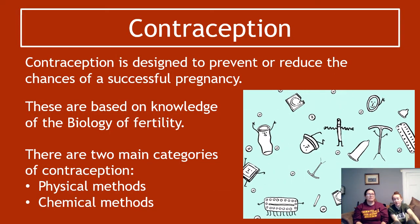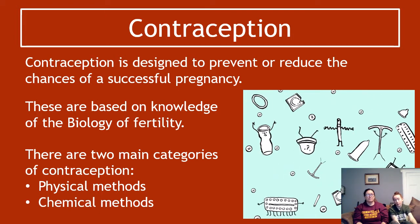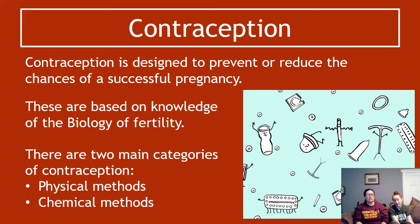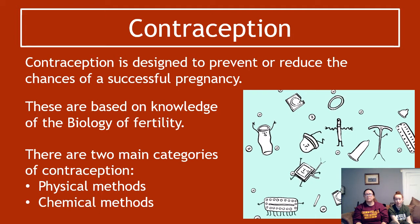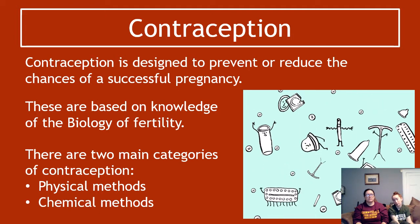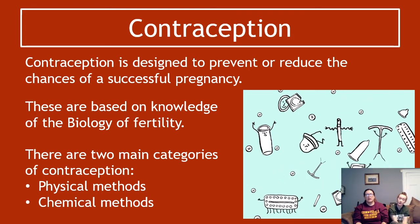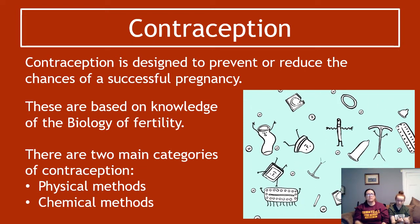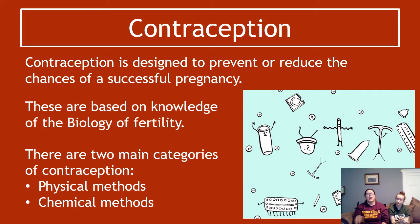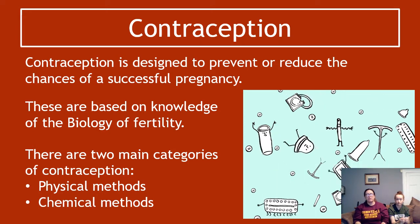The biology of preventing sperm and ova from meeting, preventing sperm and ova from being produced, or preventing implantation of the zygote into the endometrium. You have to make it sciency. If it's not sciency, you're not going to get the marks. So in general, there are two main categories: physical methods and chemical methods. Contraception is just ways that we can reduce or minimize the chances of a pregnancy happening, and these are all based on the knowledge of the biology of fertility.